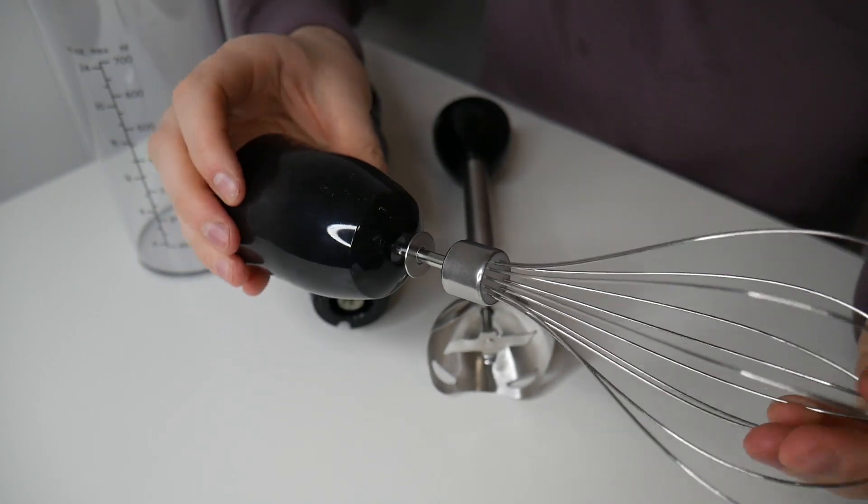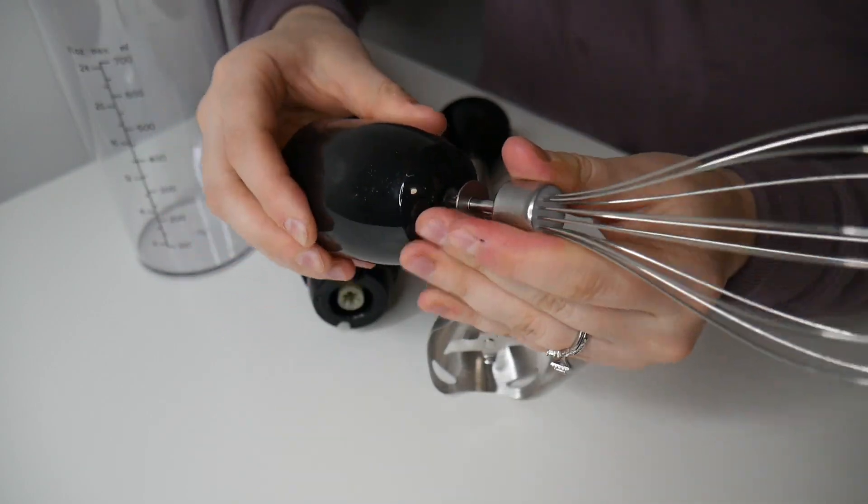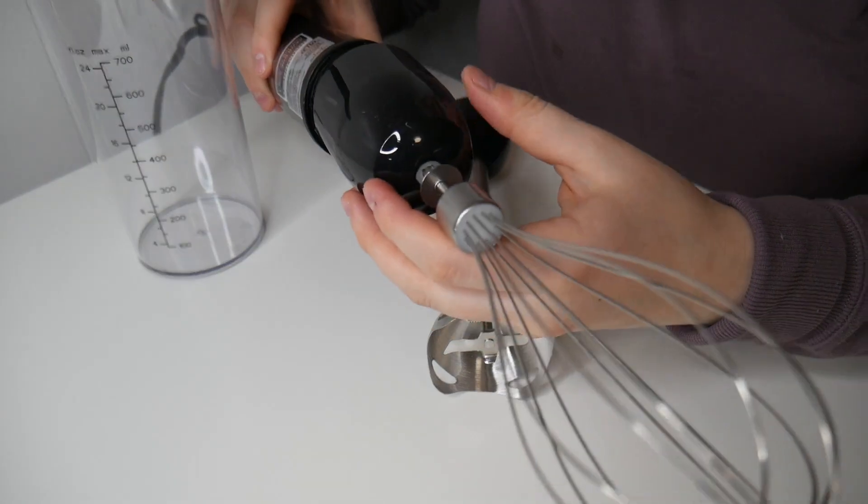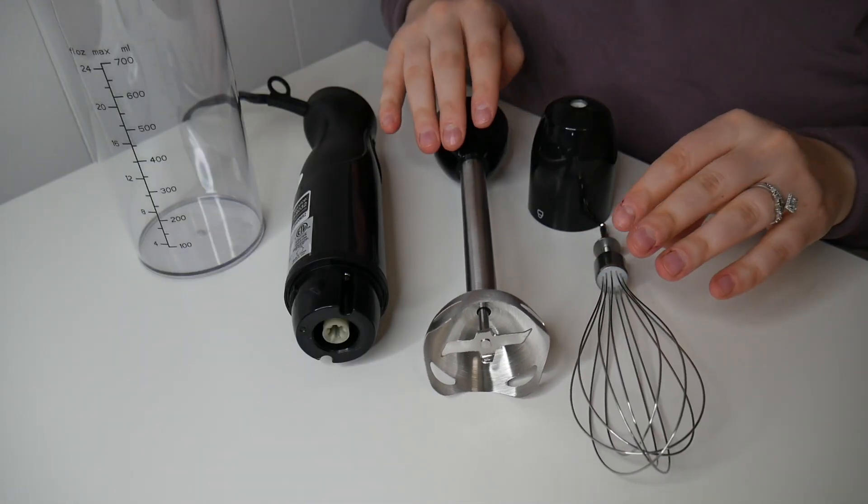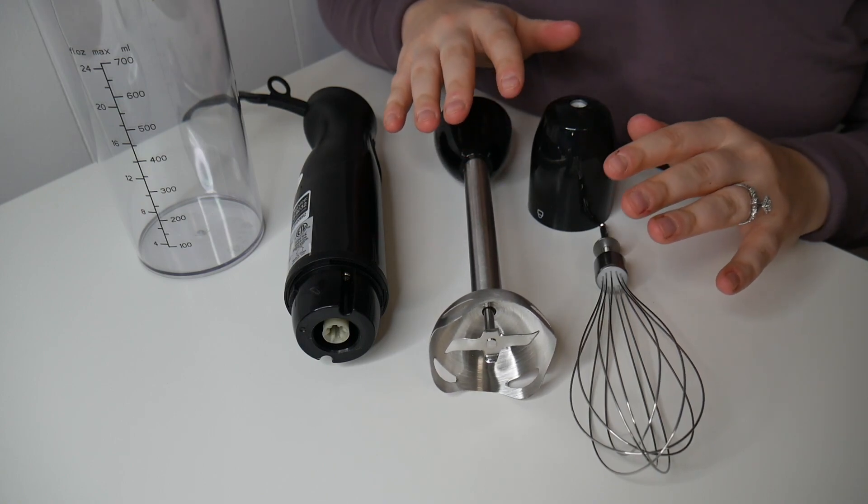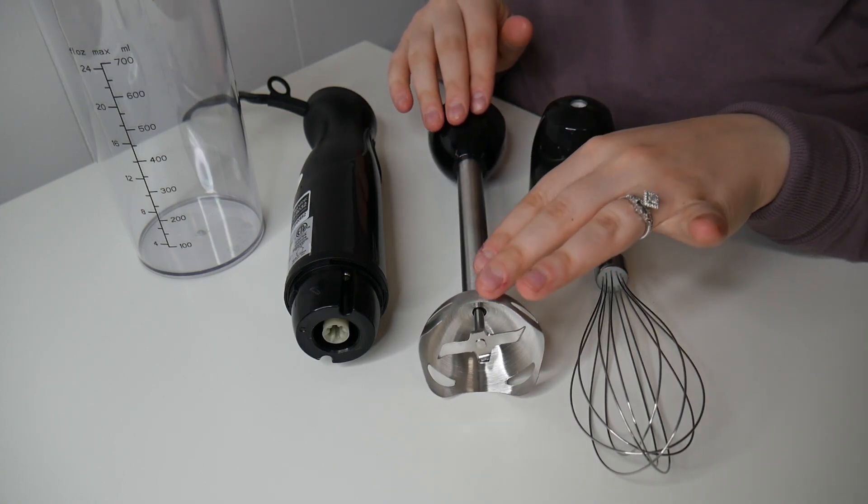This attaches with a twist, and then this head will attach onto the immersion blender again by twisting. I really like how this comes with two different styles of heads so it can become a hand mixer or an immersion blender, and it can help eliminate the appliances that you need in the kitchen.